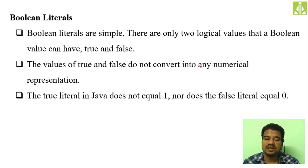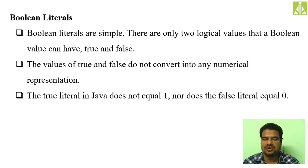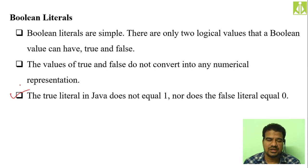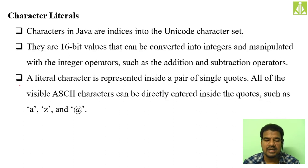The values true and false do not convert into any other numerical representation. Unlike in C where non-zero numbers represent true and zero represents false, in Java you cannot convert your boolean type into some other numerical type. True means true and false means false only. The true literal in Java does not equal to 1, nor does the false literal equal to 0. This is an important statement — unlike structured programming languages C and C++.